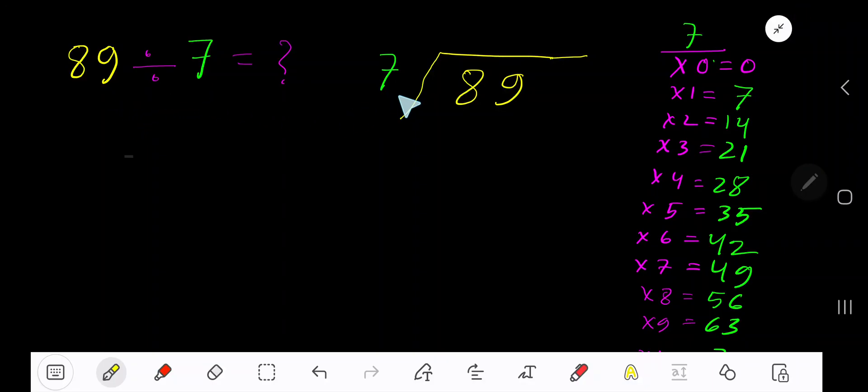89 divided by 7. Here 7 is the divisor, so we need the multiplication table of 7. 7 times 0 is 0, 7 times 1 is 7, 7 times 2 is 14, 7 times 3 is 21. To find the multiplication table of 7, just add 7 with the previous step: 0 plus 7 is 7, 7 plus 7 is 14, 14 plus 7 is 21.